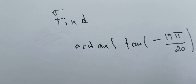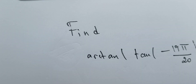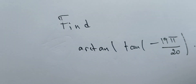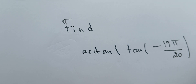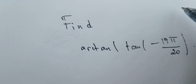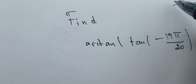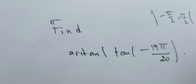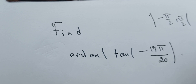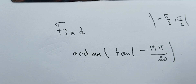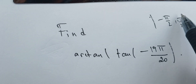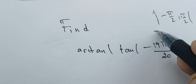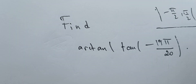In this video, we're going to find the arctangent of the tangent of 19π/20. Note that this function can be restricted on (-π/2, π/2), not including -π/2 or π/2. It's basically defined everywhere except at these multiples of π/2 and -π/2. But here we're going to restrict it on (-π/2, π/2) to get the values.